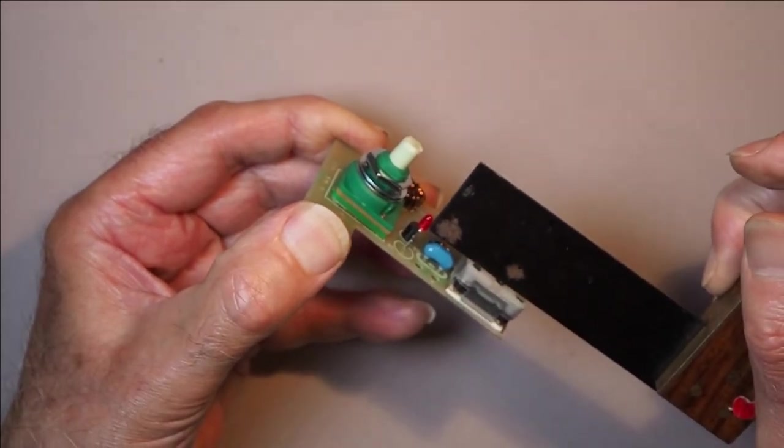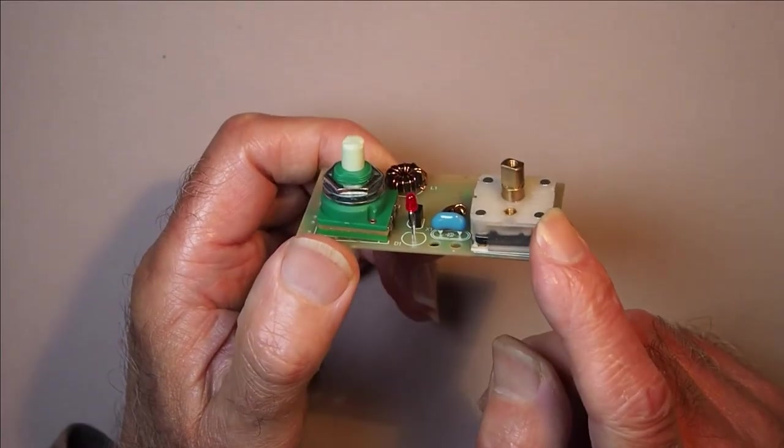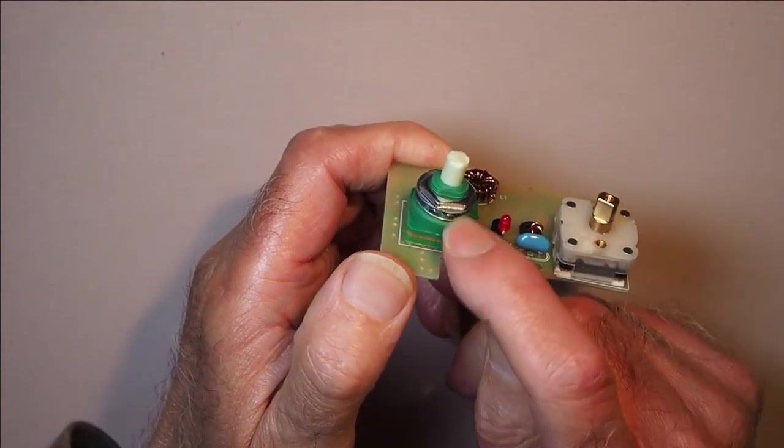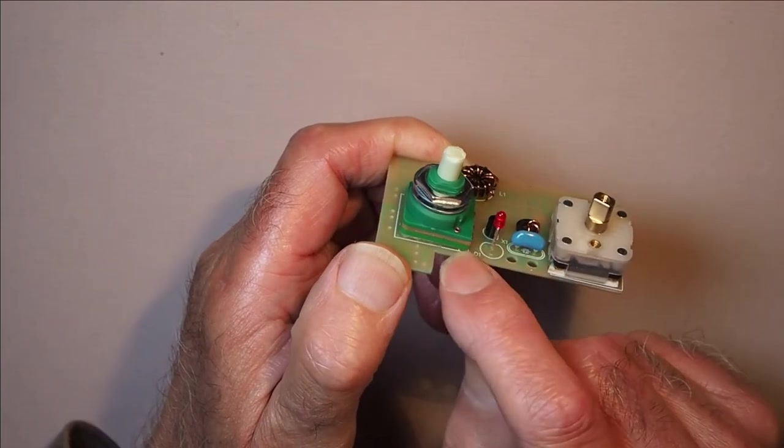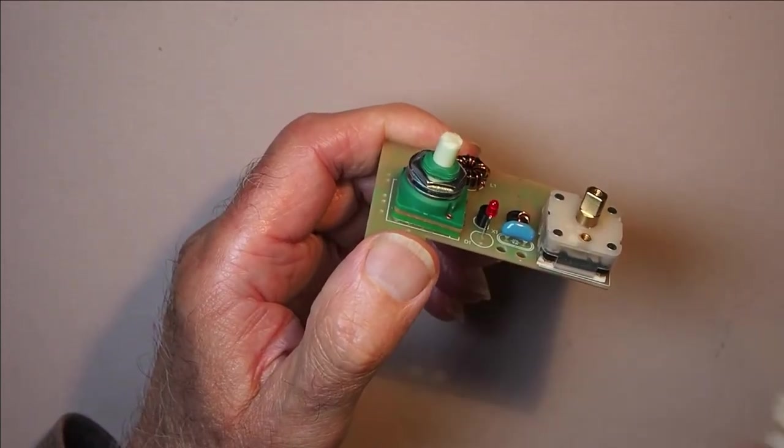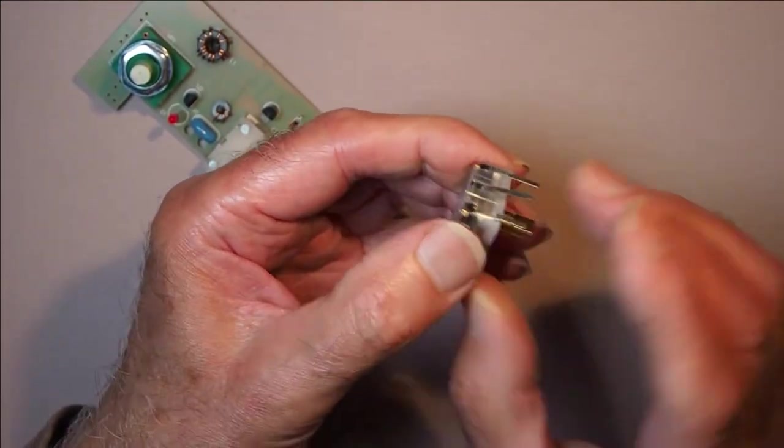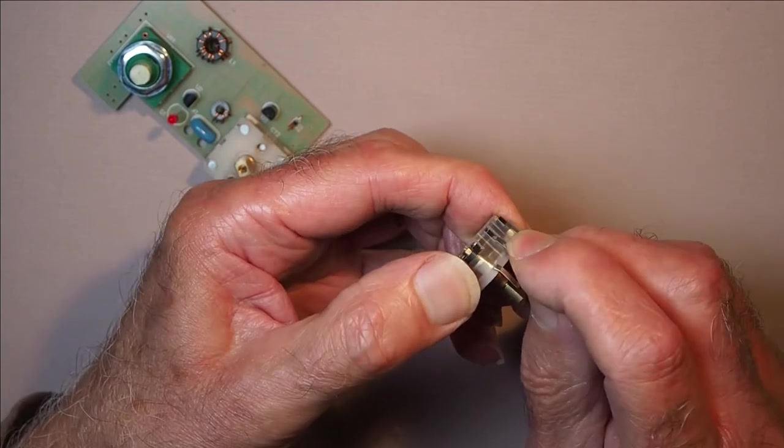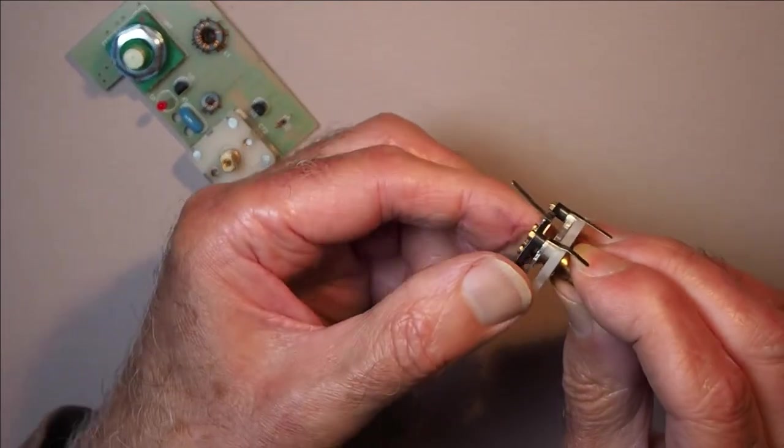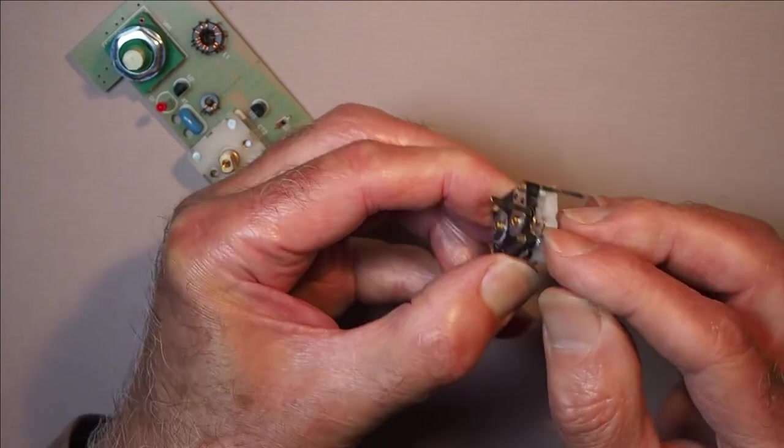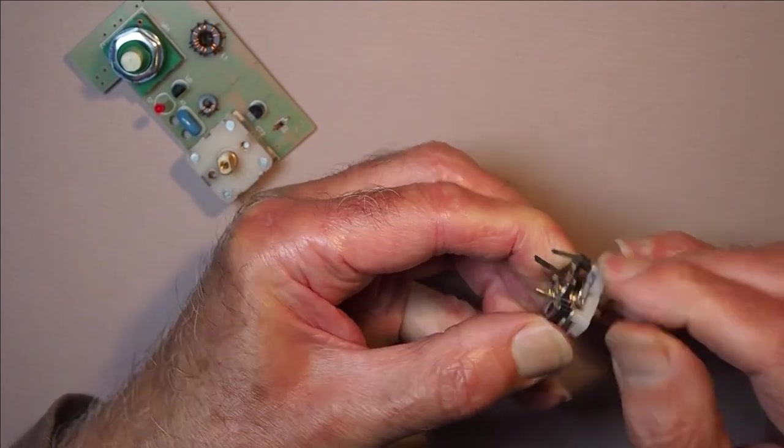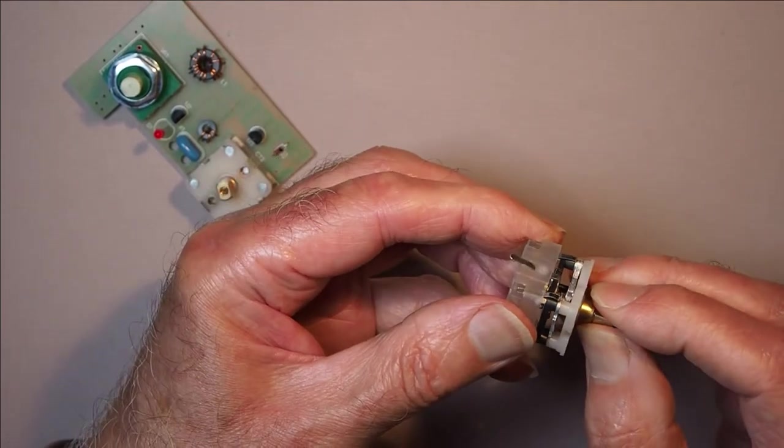Now the tuning capacitor ideally should be a low profile type which has got a similar body height to the volume control pot. Now the lead outs need to be bent backwards, which is not how they are usually supplied. So here's one with the leads bent forward. So what you need to do is to remove the back casing and just bend the leads backwards, and then just reassemble the casing.